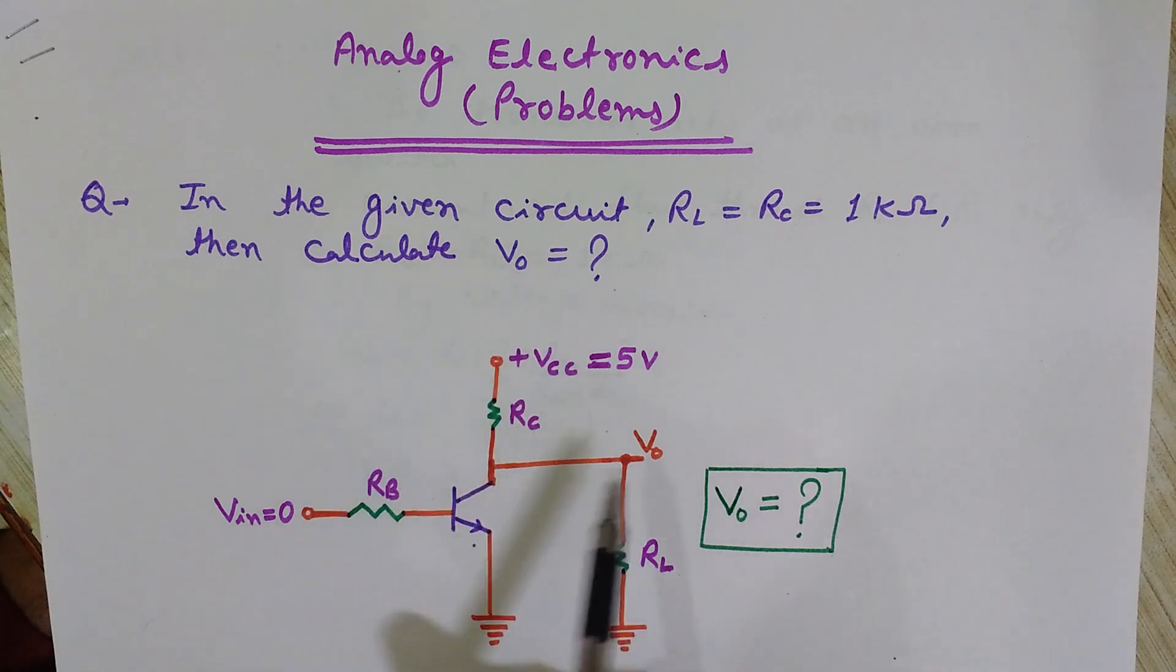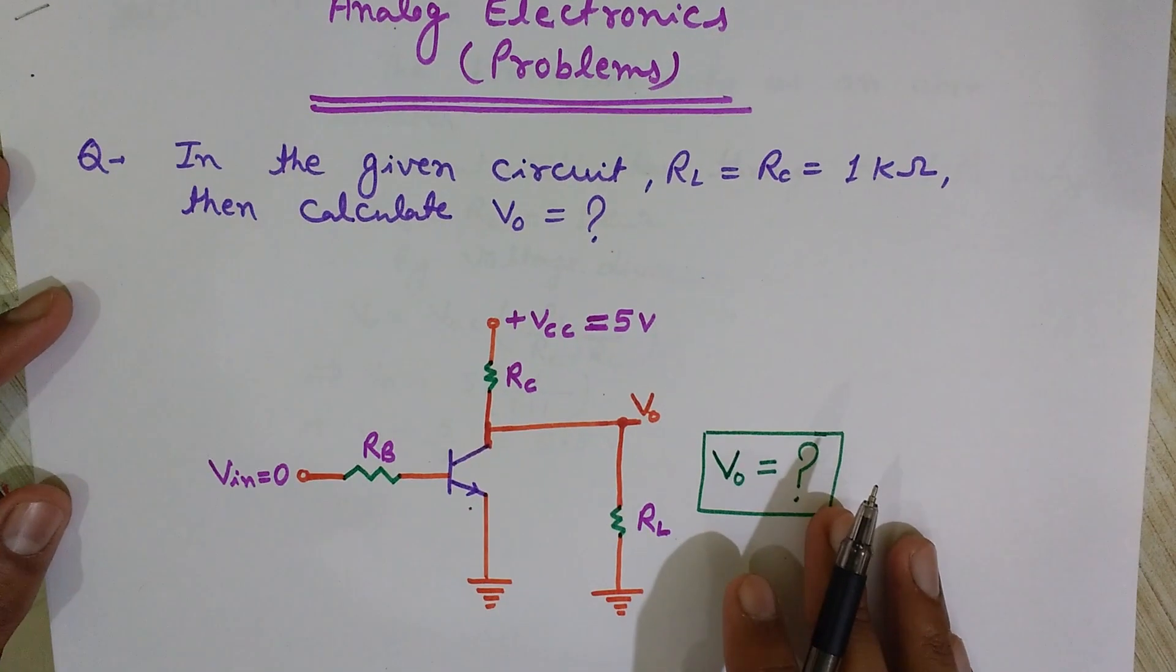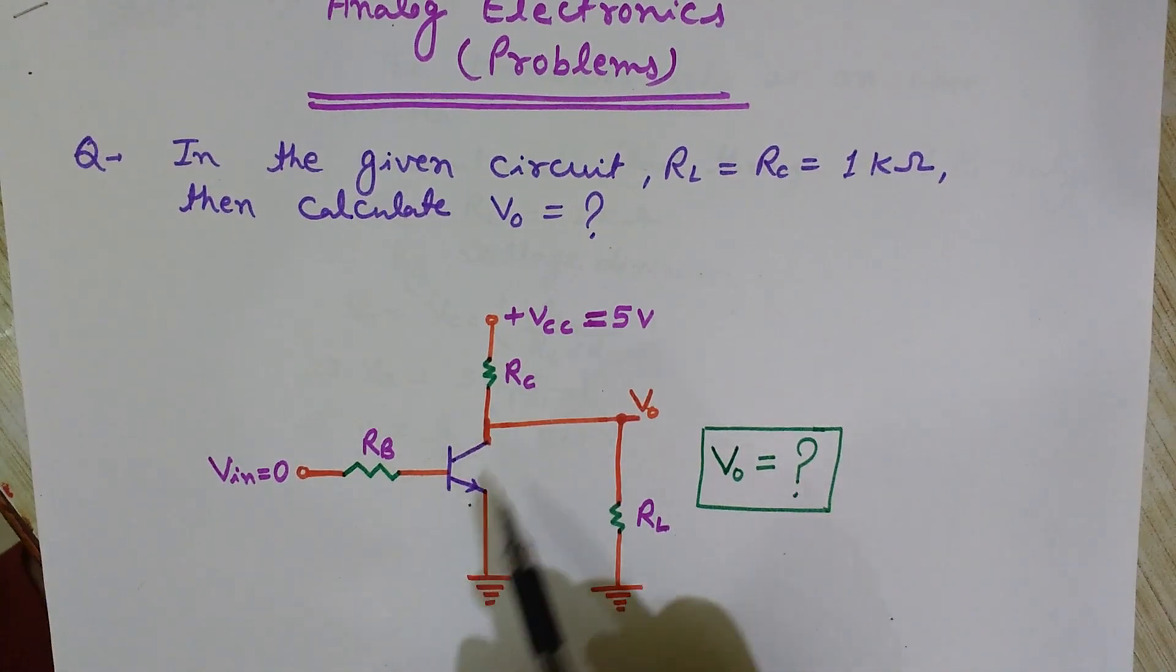This is the V0 and we need to find the V0. Here you can see that this is a bipolar junction transistor, it is NPN type. This is emitter, this is collector side, this is base.